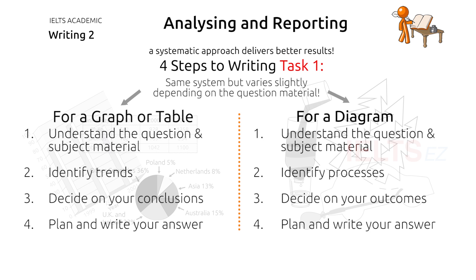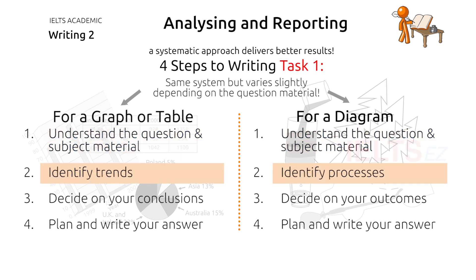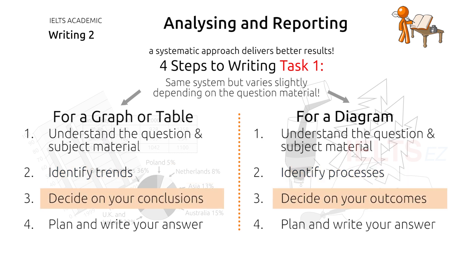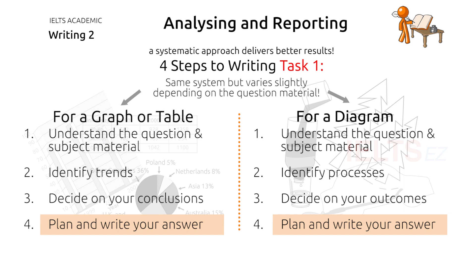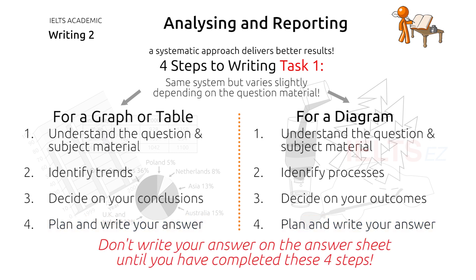Let's now take a quick overview of these four steps. The first step is to thoroughly understand the question and the subject material presented. If you're not really clear on what you've been asked, you'll end up including irrelevant information which will lower your score. The second step is to identify trends or processes. The third step is to take the information from steps 1 and 2 and write logical conclusions or outcomes. Lastly, having completed the first three steps, you should plan and write your answer. You should not start writing on your answer sheet until you have completed these four steps.